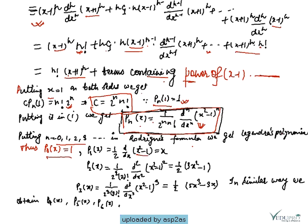For n=0: P0(x) = 1. For n=1: P1(x) = (1/2) · d/dx (x²-1) = x. For n=2: P2(x) = 1/(2²·2!) · d²/dx² (x²-1)² = 1/8 · d²/dx² (x²-1)², which after differentiation and simplification gives P2(x) = (1/2)(3x²-1).